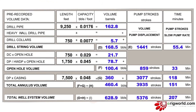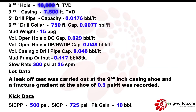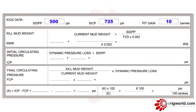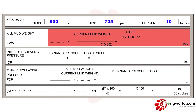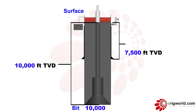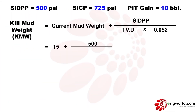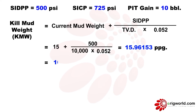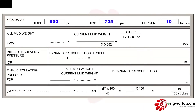From the first page we can calculate the kill mud weight. Using TVD — total vertical depth of 10,000 feet — multiplied by the constant, I get approximately 15.96, which rounds to 16. So kill mud weight is calculated as 16 ppg.